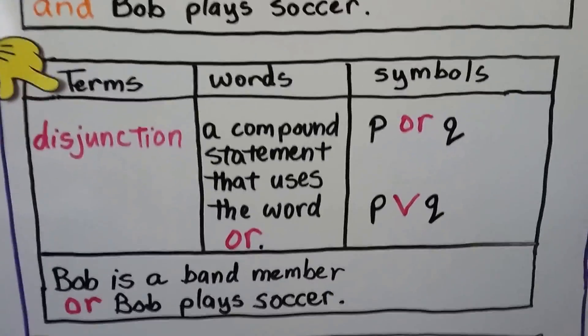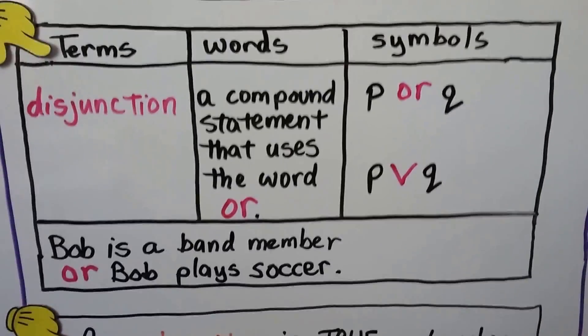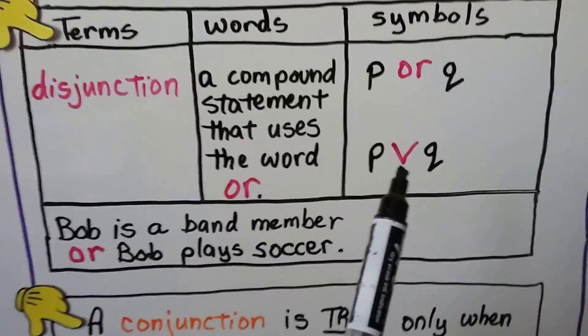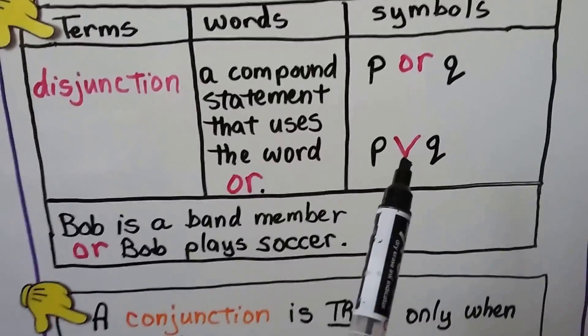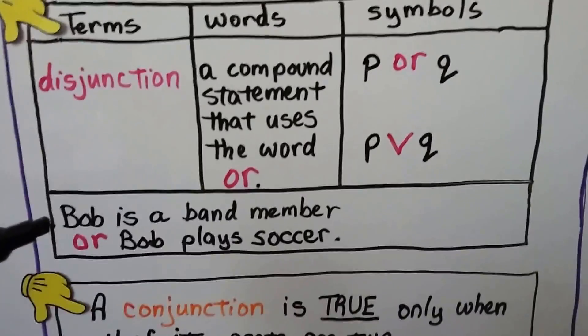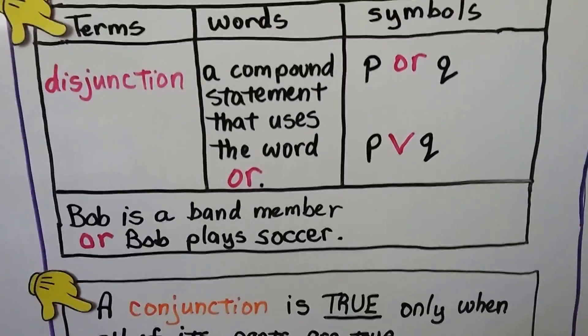A disjunction is a compound statement that uses the word or. So we would have P or Q. P, Karen, Q. The Karen symbol for or. And we would read it as P or Q. So Bob is a band member or Bob plays soccer.